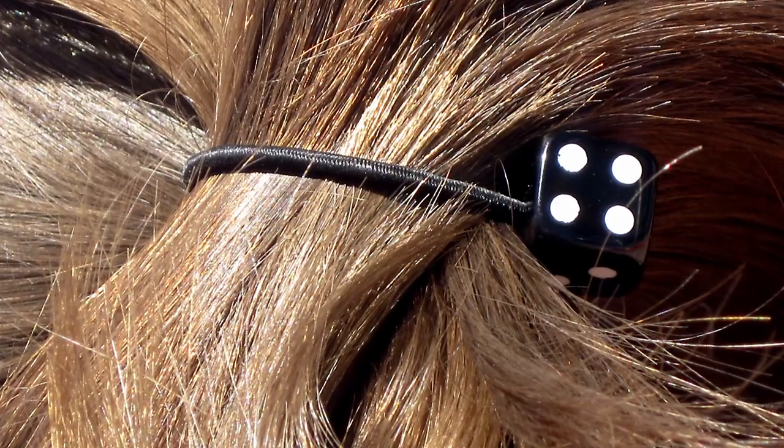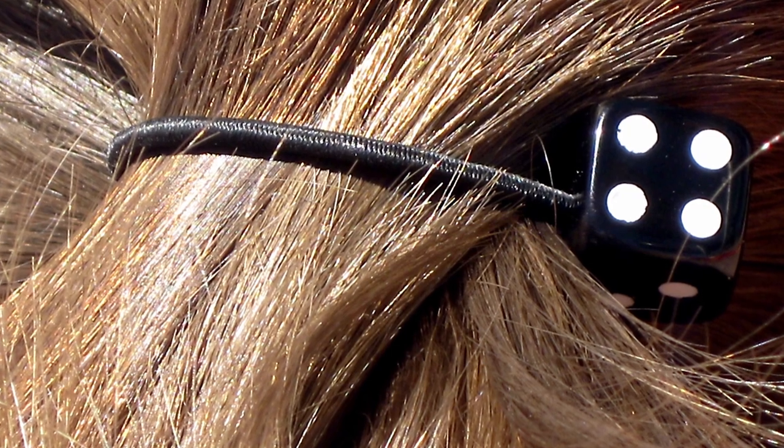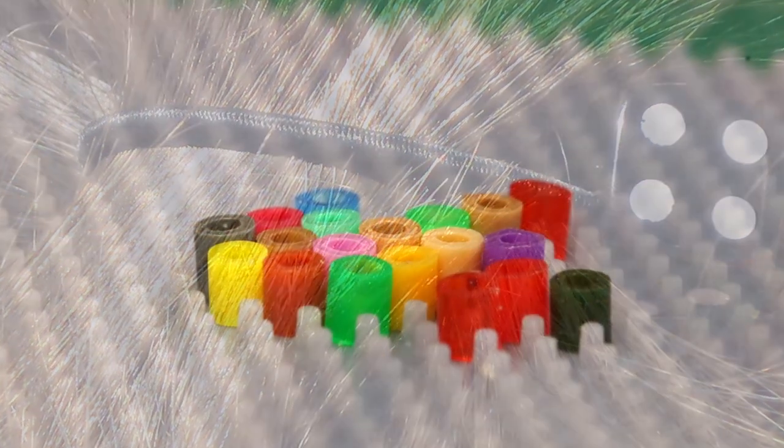To give you an idea, the width of a human hair is approximately 60 to 150 microns. So, it can print details finer than a human hair.